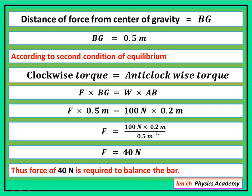Now meter and meter will cancel each other. Only newton unit will remain with us. So this is 100 into 0.2 divided by 0.5 so this becomes 40 newton. So in this way the force required to balance the bar will be 40 newton.